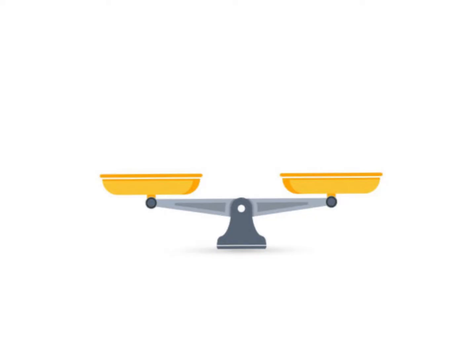When we're working with equations, you can think of an equation like a balance or a scale that you use in science class. All equations are balanced — if you see an equal sign, it means whatever you have on one side is equal to whatever's on the other side. So it's a balanced scale. For example, 3 plus 6 on one side and 4 plus 5 on the other side — those are balanced. 9 equals 9.